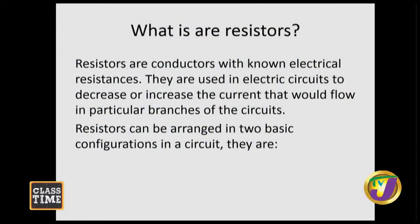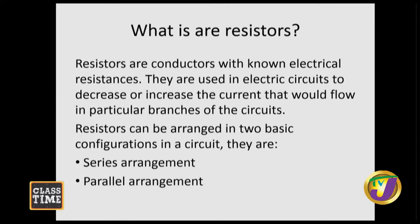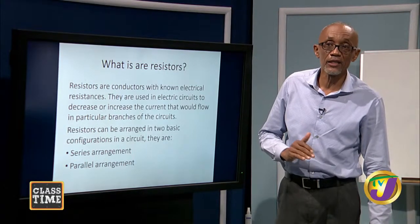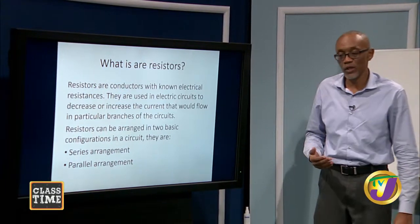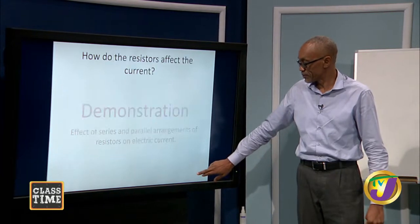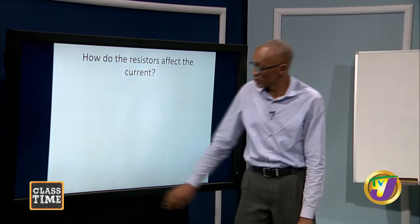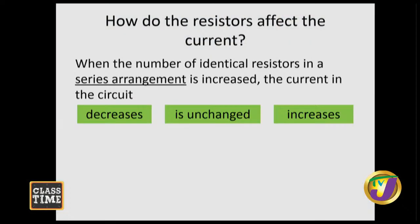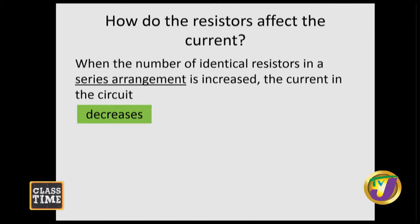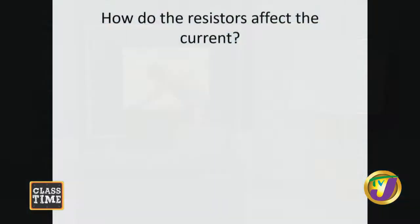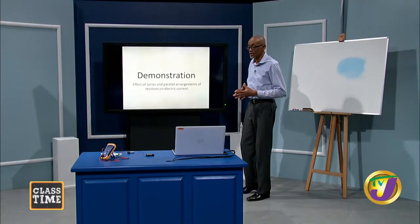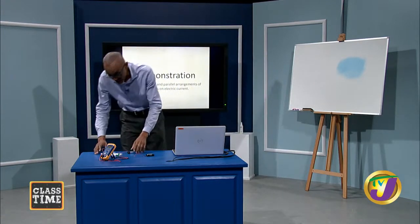Resistors can be arranged in two basic configurations in a circuit: a series arrangement or a parallel arrangement. It is because of these configurations that we can get either a decrease or an increase in current. Here's a little demonstration. We will look at the effect of series and parallel arrangements of resistors on electric current.